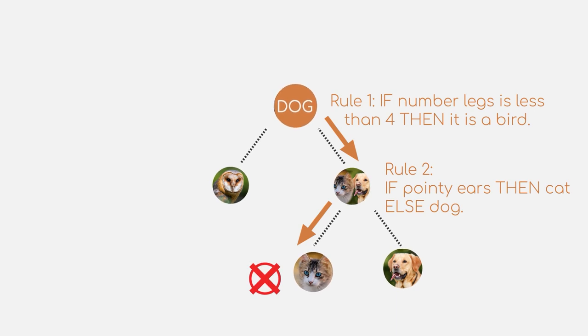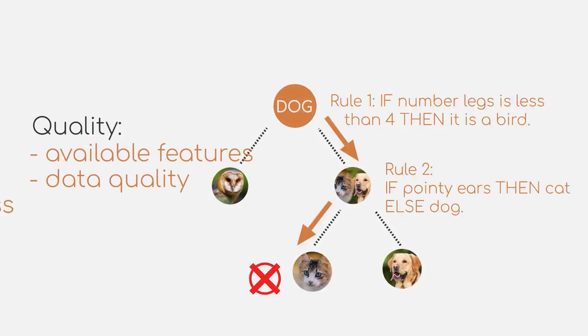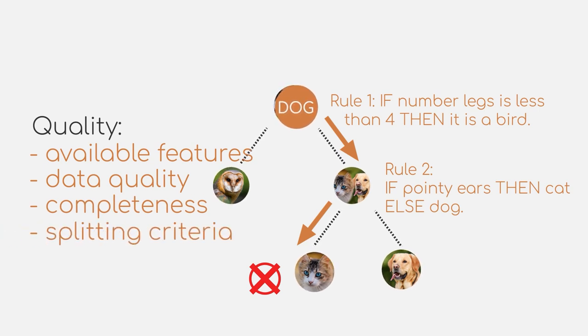Well, as mentioned before, we cannot always have the perfect model. The quality of the tree that is built depends on multiple factors, such as available features, data quality and completeness, but also on the splitting criteria. But more on this in the next video.